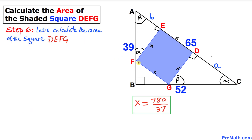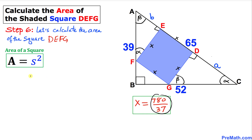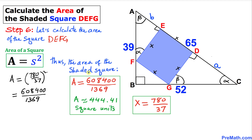Here is our final step. Let's calculate the area of square DEFG. The area of a square is A equals S squared, where S is the side length. In our case the side length is 780 divided by 37. So the area equals (780/37) squared, which gives 608400 divided by 1369, or approximately 444.41 square units. That's our final answer. Thanks for watching and please don't forget to subscribe to my channel for more exciting videos.